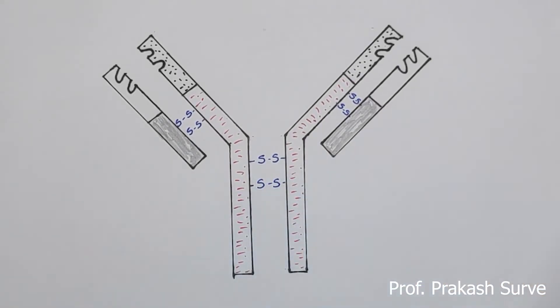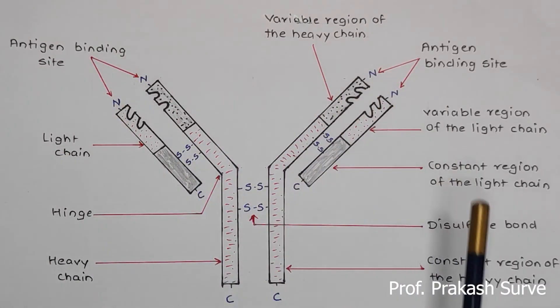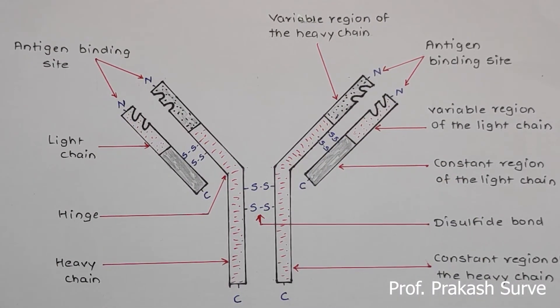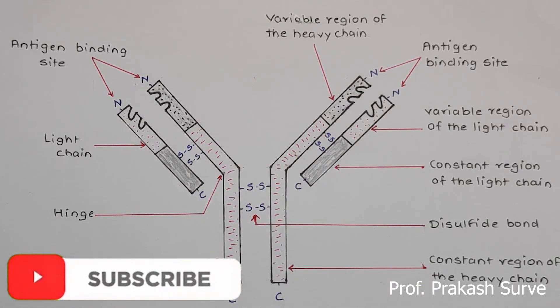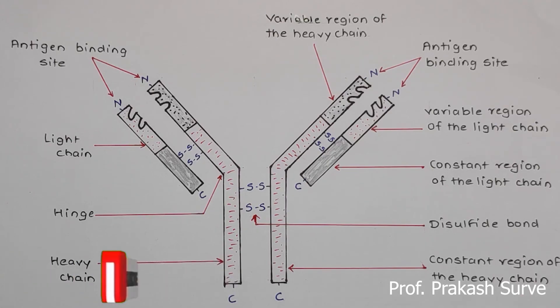Now this is what we have completed step by step. Now we will label the parts. After that you have to label the parts. So here this is the important diagram, the structure of antibody. If you like my channel, subscribe and share with your friends. Thank you.